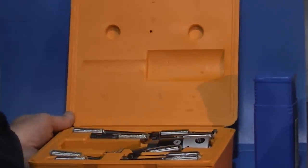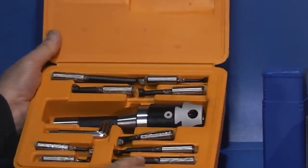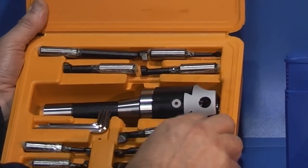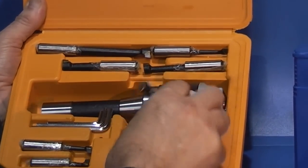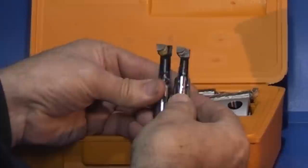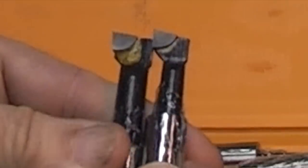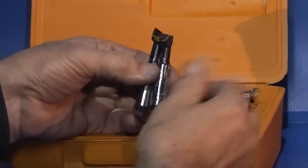This is the boring head kit. You get nine boring bars, they all have the same tip on the end, the same brazed tip. The difference between them is the length of the shank and the thickness.